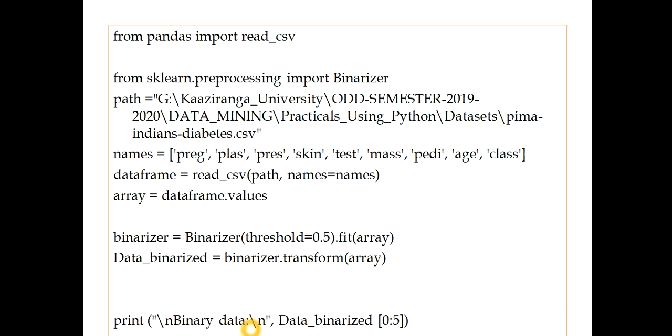Print binary data equals data binarized 0 to 5. You all know that why I am using 0 to 5. Can you answer it? Do comment it. So now open your spider.